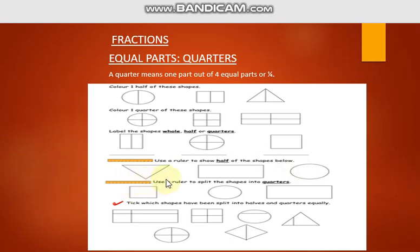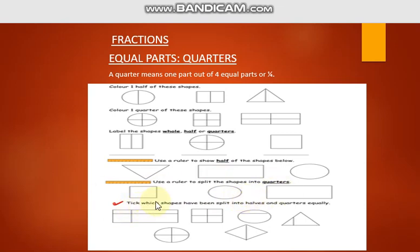The next question is: use a ruler to split the shapes into quarters. You have to divide each shape into four equal parts using a ruler. Do this for all three shapes. Then, tick which shapes have been split into halves and quarters equally.